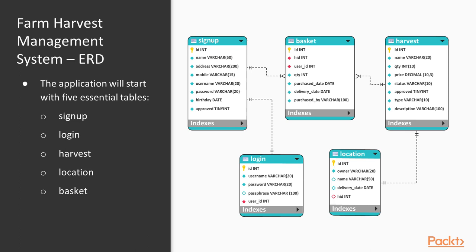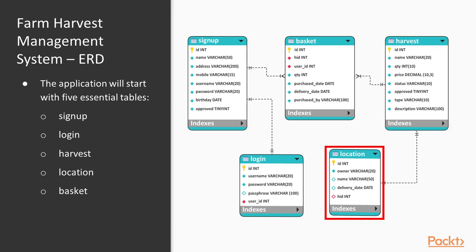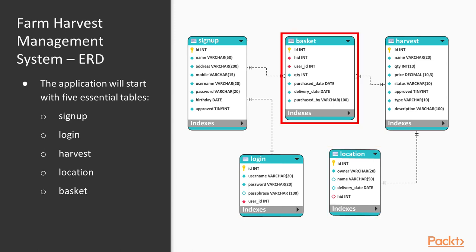Before we proceed with the setup and configuration of our Spring Data JPA module, let me show you the five essential tables our application needs. First, the Sign Up Table Schema, which will consist of all the user records of the application. The Login Table, which will contain all of the login credentials of the approved and valid users. The Harvest Table, which will contain all of the records of the harvested goods posted for sale. The Location, which depicts all of the market locations where the goods are to be sold. And the Basket Table Schema, which contains all of the ordered goods.